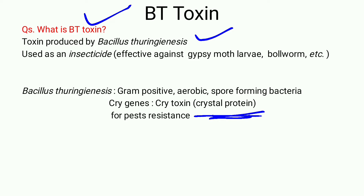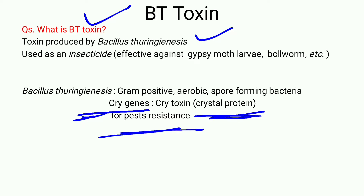It is also called crystal protein or parasporal body — all referring to the same thing. The genes responsible for the formation of this toxin are the cry genes. It is named cry because this protein or toxin is crystalline in nature. These cry genes confer pest resistance, that is resistance against insects like the larvae or caterpillar of bollworm or gypsy moth.